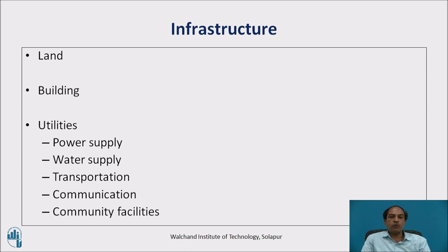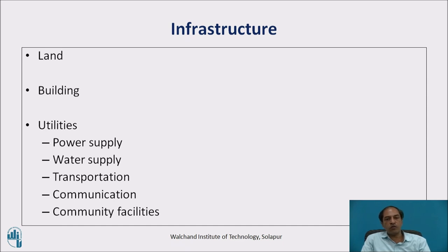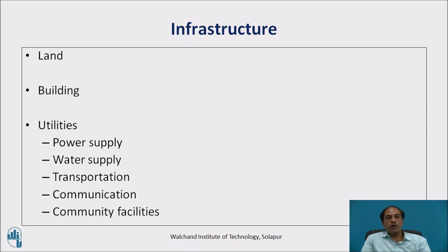Once market analysis is done and we have calculated the volumes and how they are steadily growing month by month and year by year, the next step is to set up the complete plant. For that, we need infrastructure: what is the land required, what is the plot size, what are the various permissions necessary — building permissions, utilities such as power supply, water supply, transportation facilities, communication facilities, and other community facilities nearby. We must also determine what legal compliance and government authority licenses are required for starting up the unit.